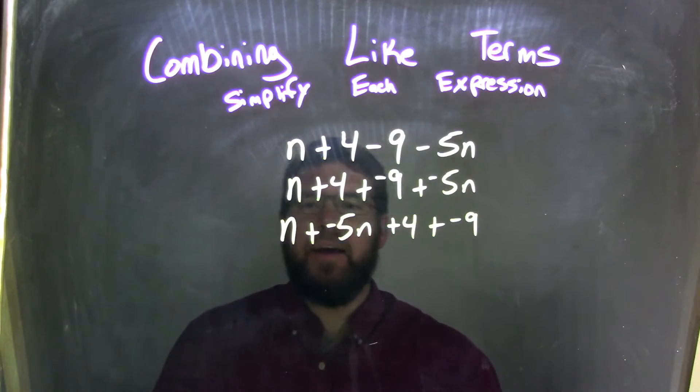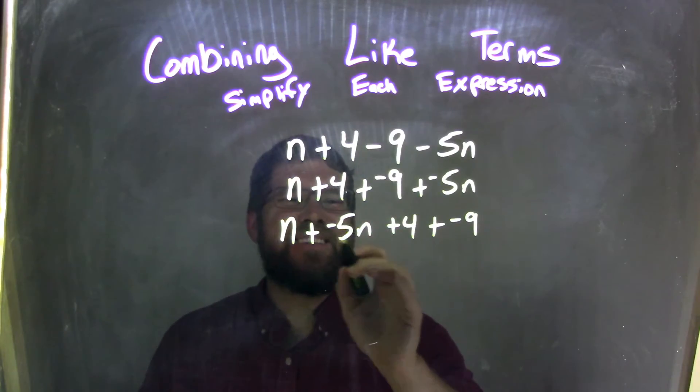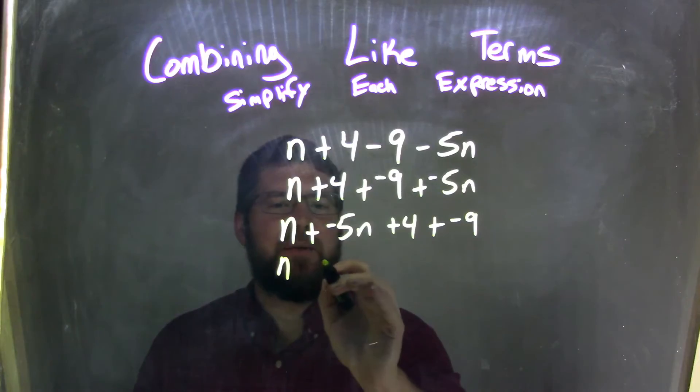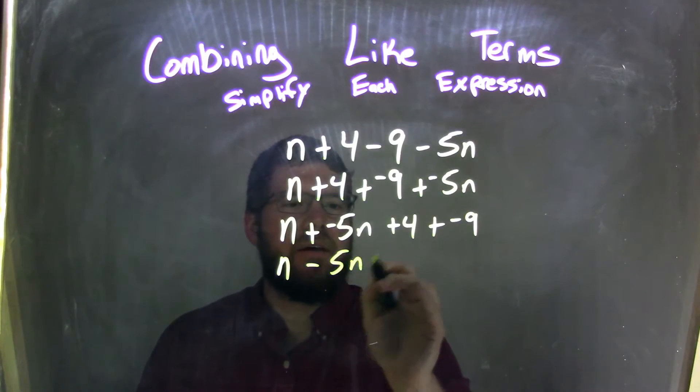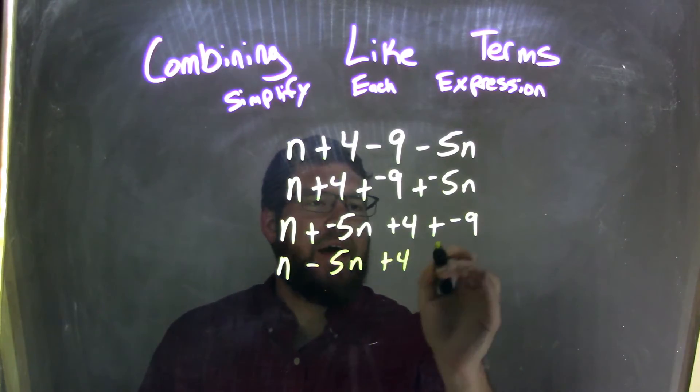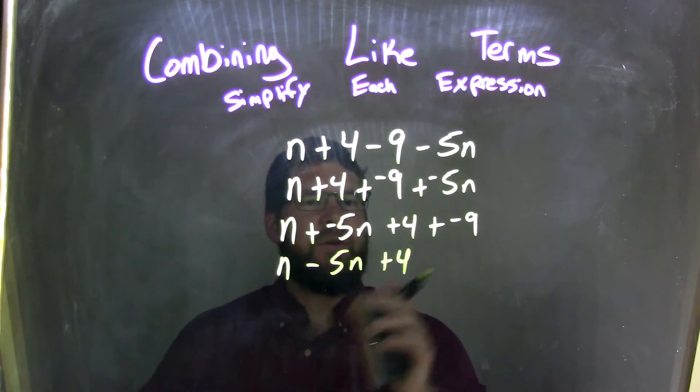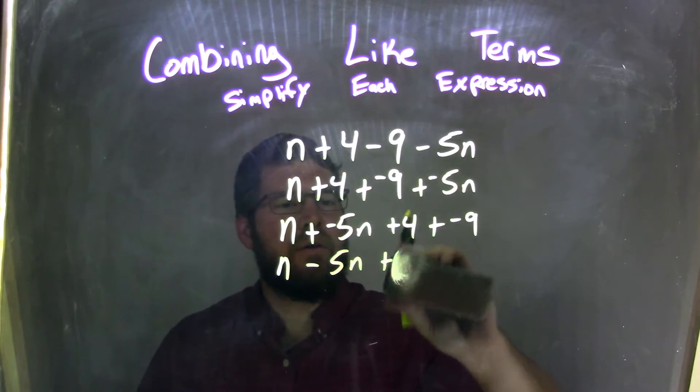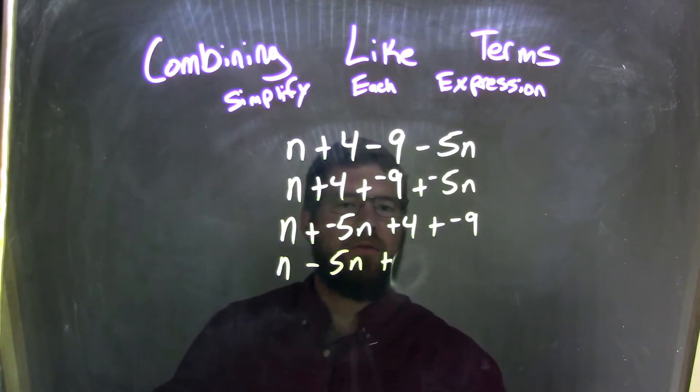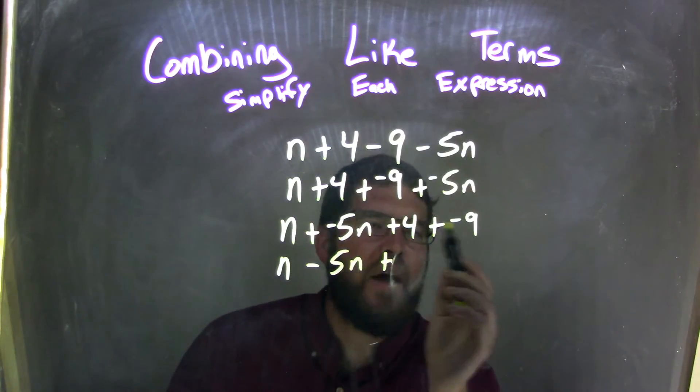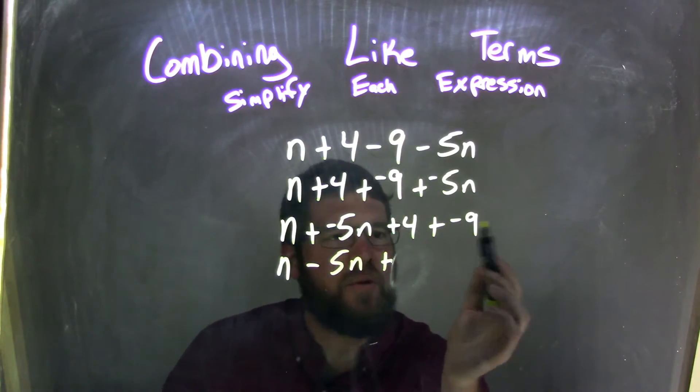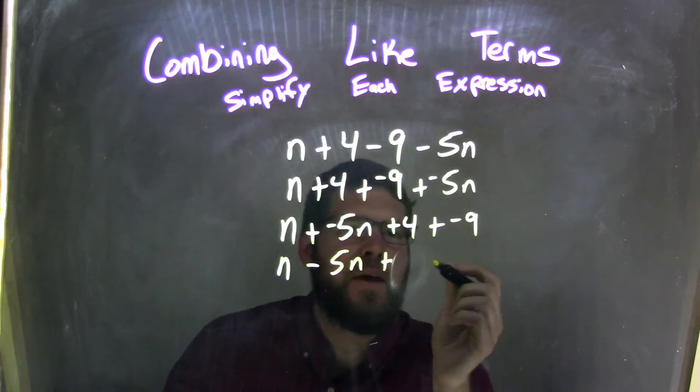So now we know that n plus a negative 5n, well, adding a negative is the same thing as subtraction. So I can rewrite that to be n minus 5n. And then I'll bring down the plus 4. Instead of rewriting that plus 4 here, I want to think about is there any way I can maybe rearrange this or do something that makes it easier?